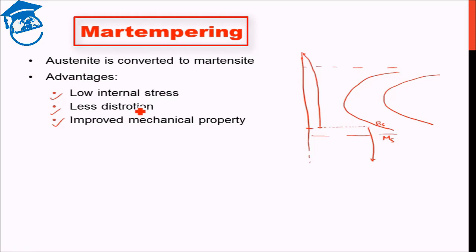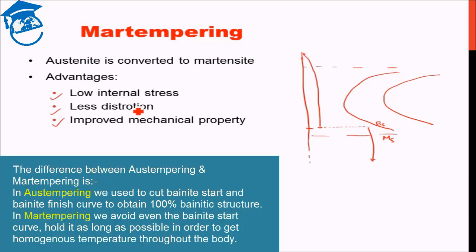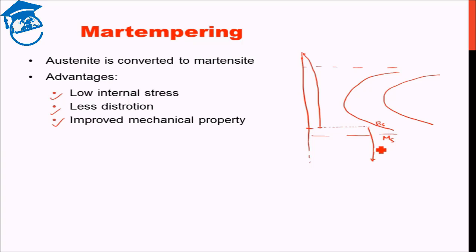So you see the difference between austempering and martempering. In austempering, we cut through the bainite start and bainite finish to obtain 100% bainitic structure. In martempering, we avoid even the bainite start curve, hold it as long as possible in order to get homogenous temperature throughout the body and then quench it further.